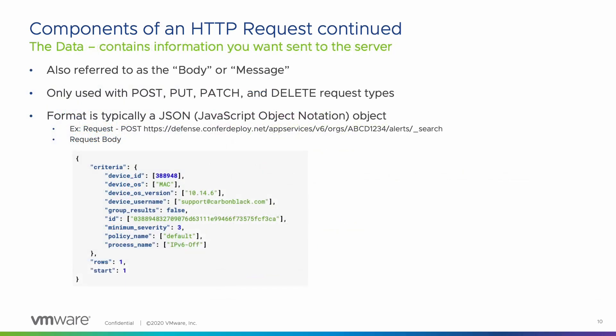The final component is the data, which contains the information you want to send to the server. It is often referred to as the body or message, and is used with POST, PUT, PATCH, and DELETE methods. The format you'll typically see is a JSON object, like the photo in the slide. Here we are doing an alert search, and we have included search criteria in the request body to filter the results.